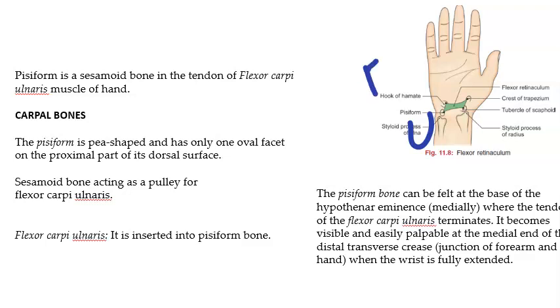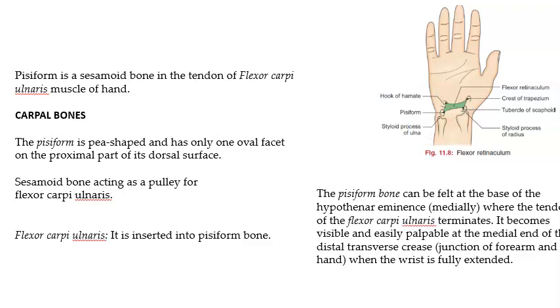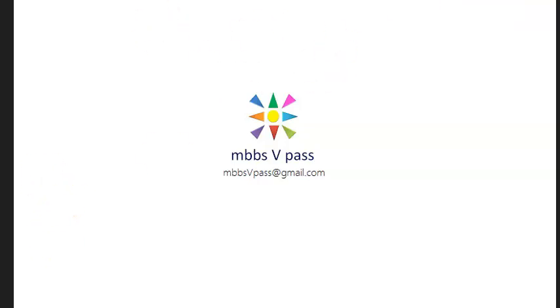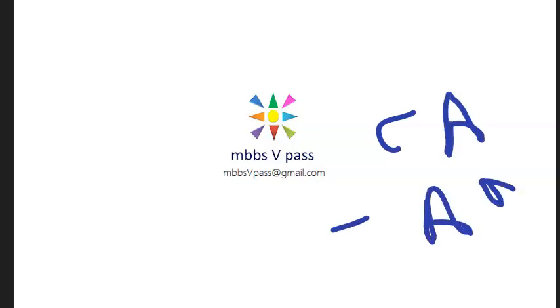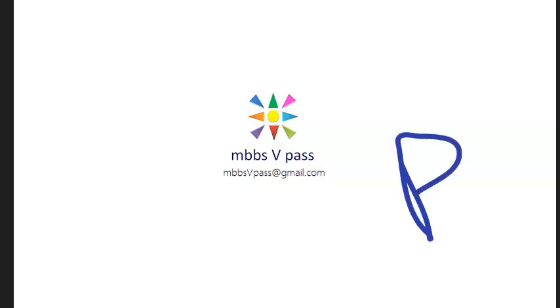Remember: flexor carpi ulnaris. These are the carpal bones at the wrist joint, and they can serve for age determination. If they ask clinical anatomy, you write age determination. If the person has delayed onset of puberty, they can have delayed ossification of these bones also.